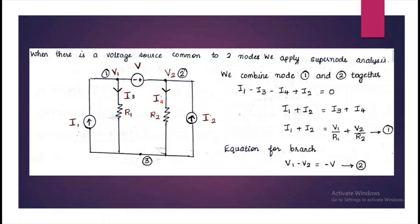In Supernode Analysis, we write the combined KCL equation of both the nodes having common voltage source. So here, we will combine node 1 and node 2 and we can write the KCL equation as I1 minus I3 minus I4 plus I2 is equal to zero. So we can rearrange this to get equation 1.